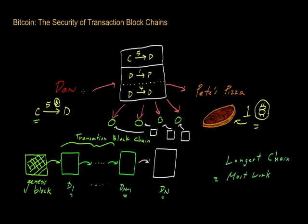The way Dan is going to try to defraud the system is by attempting to create another transaction in which he assigns the five Bitcoins he got from Carol to somebody else. Let's call this person Fred — Fred could be Dan's alter ego or a friend of Dan's.